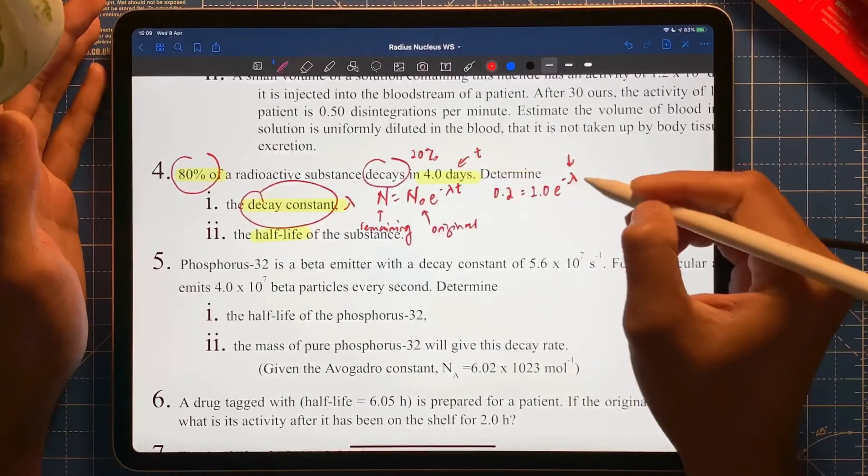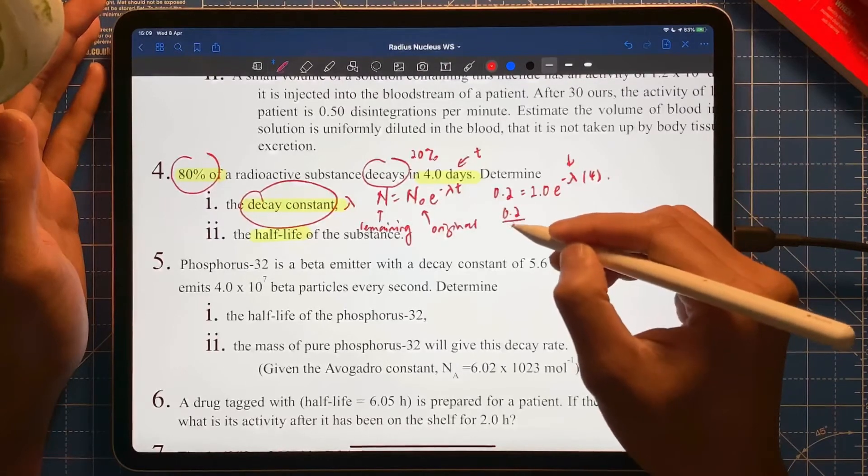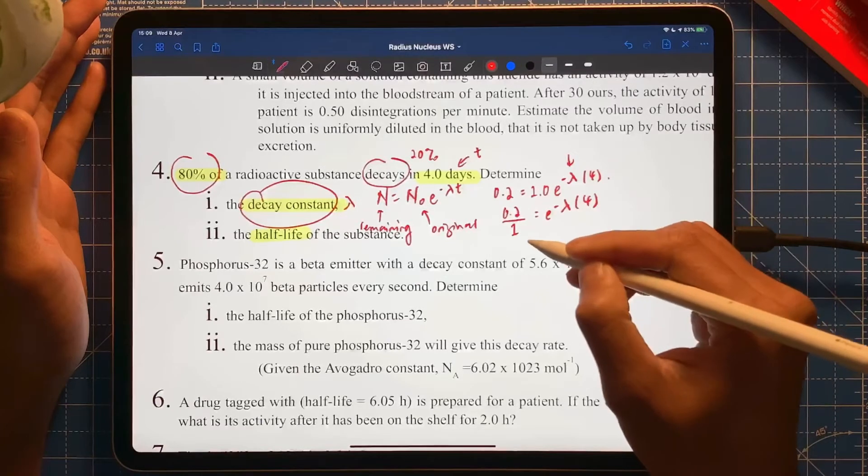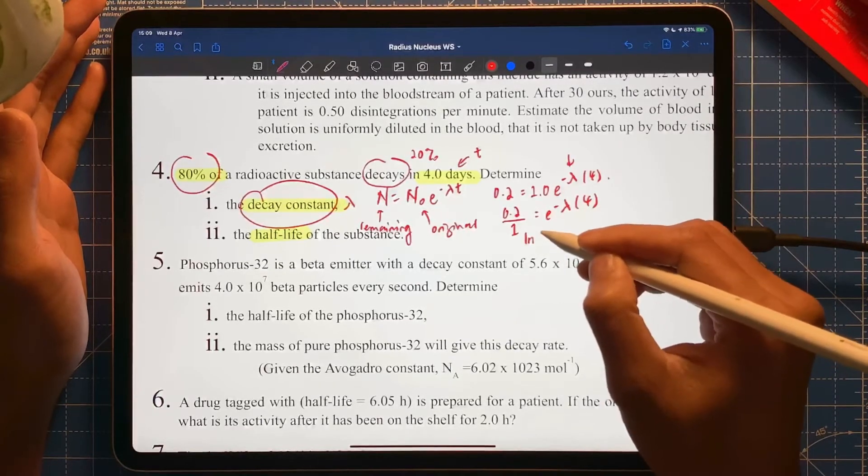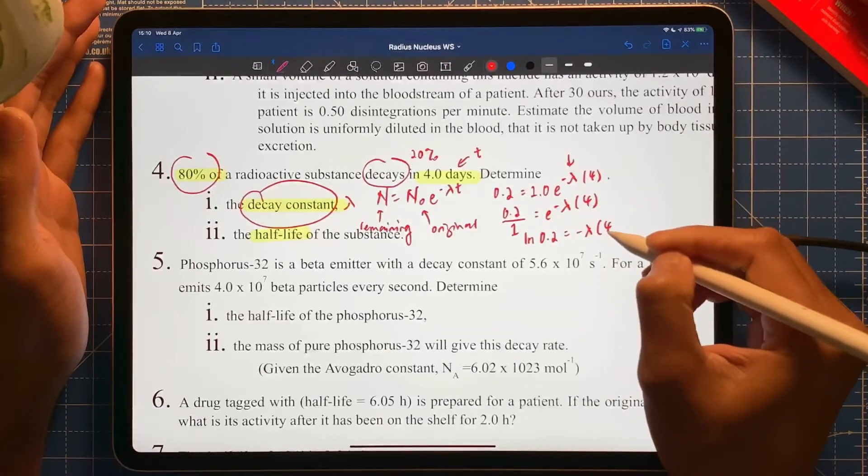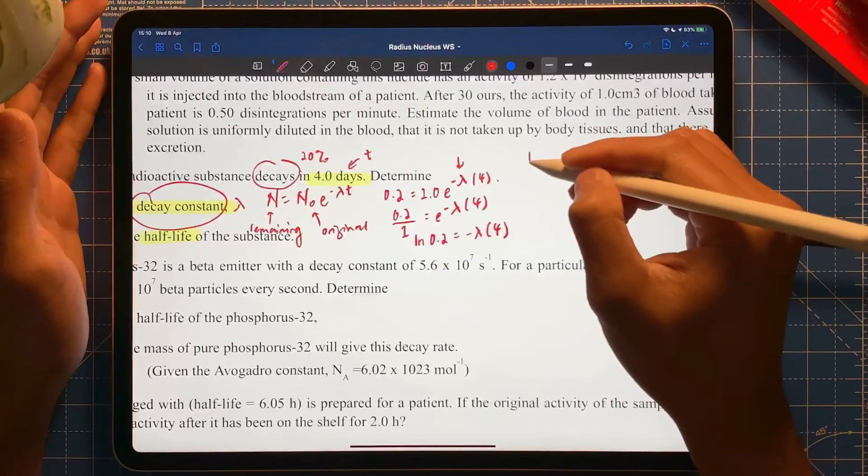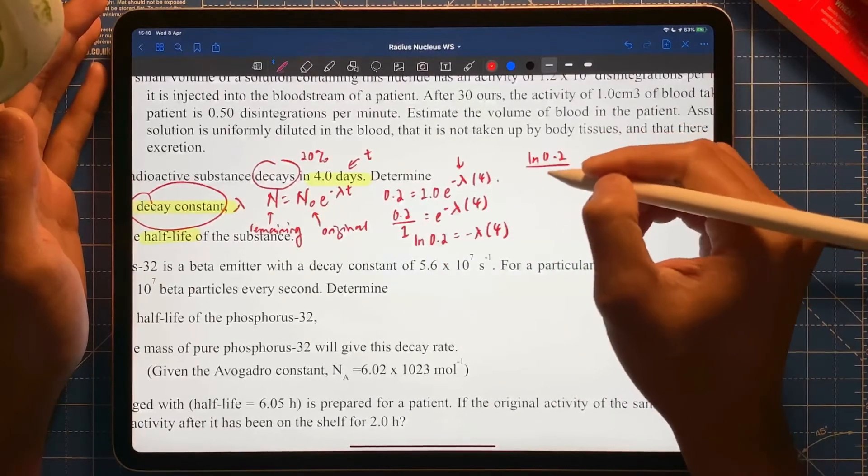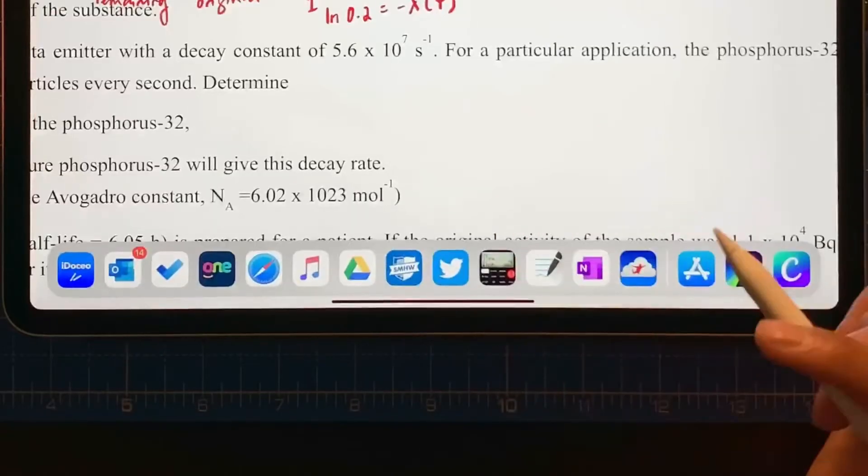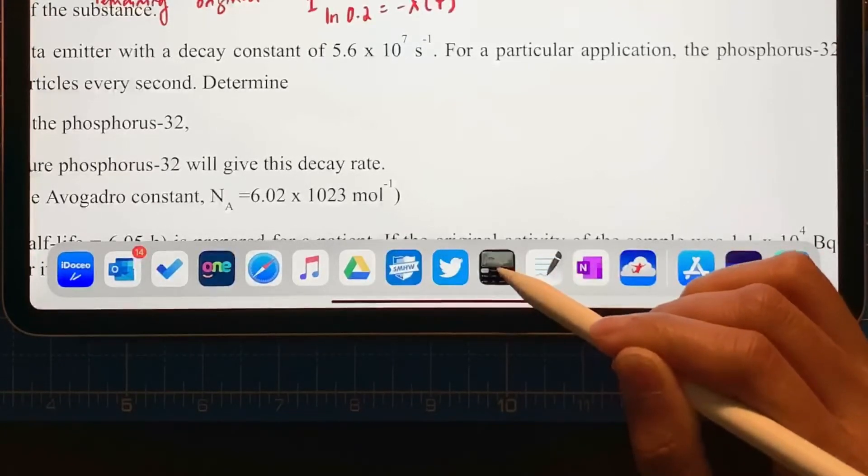If I rearrange this, you're going to divide a bit of 1 over 1. So I will get lambda is natural log. Okay, and then I need to simplify this. So I need to do lambda equals natural log of 1 over 0.2, over 4, like that.